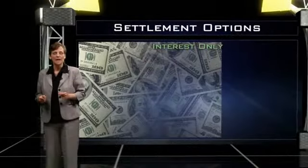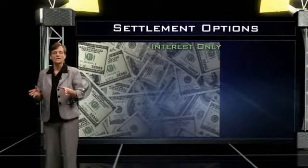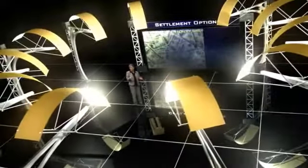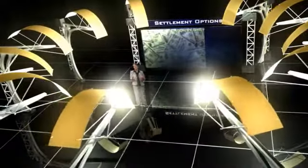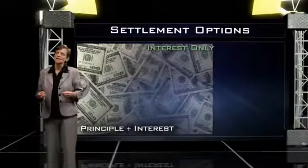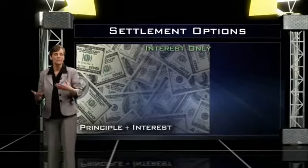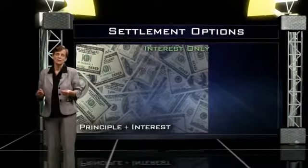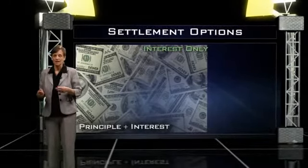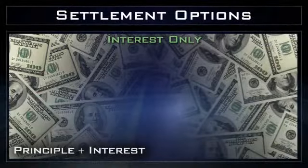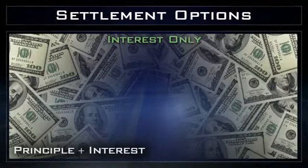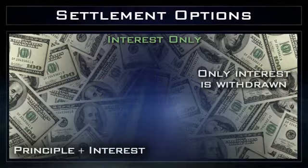The next settlement option is interest only. If a beneficiary chooses interest only, that just means that the insurance company is hanging on to the principal and making payments of interest only to the beneficiary. It's usually a temporary arrangement until the beneficiary can choose some type of a permanent arrangement. The insurance company does have to make interest payments to the beneficiary at least annually, and because it is all interest, it's going to be all taxable.